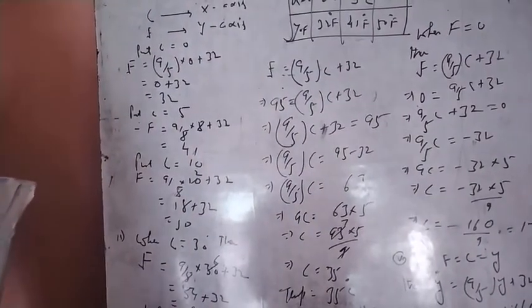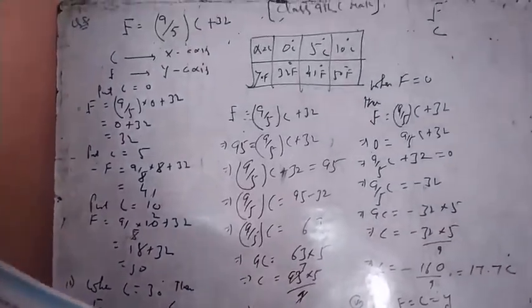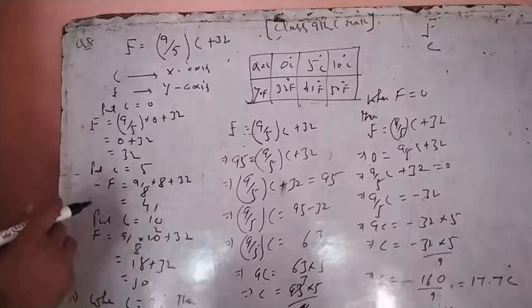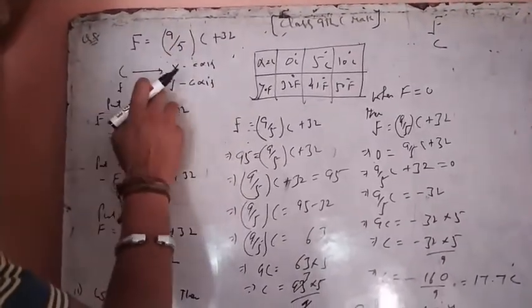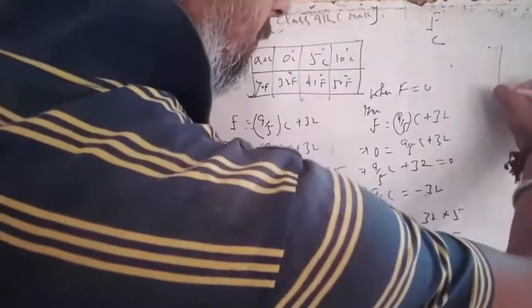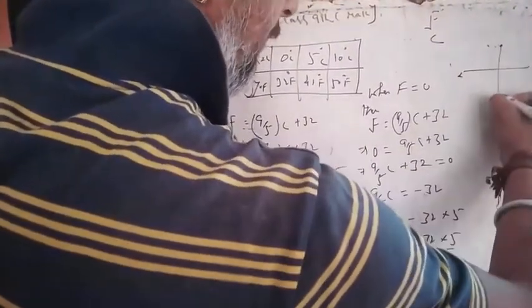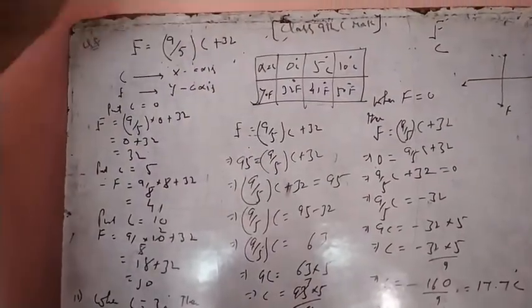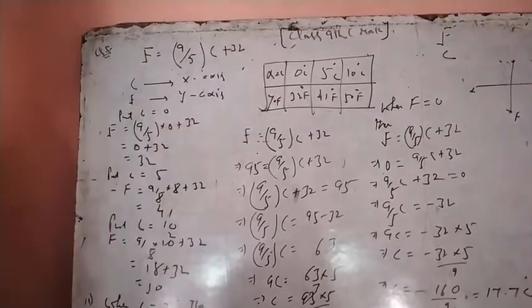The first part is draw the graph of the linear equation. We are using Celsius for x-axis and Fahrenheit for y-axis. Let's look at this equation: F is equal to 9/5 C plus 32.